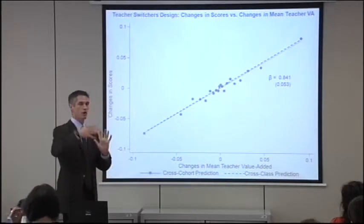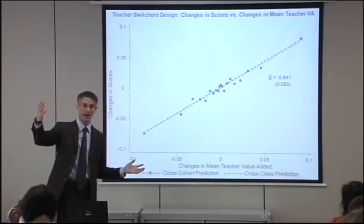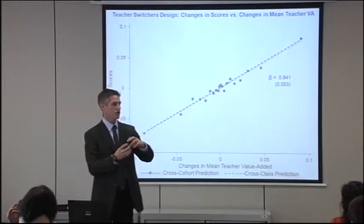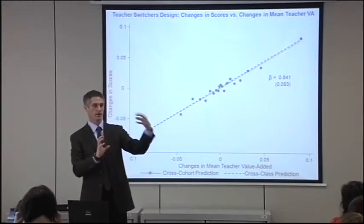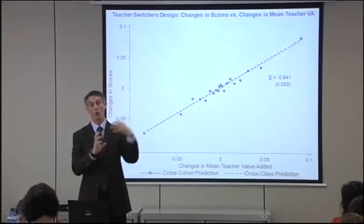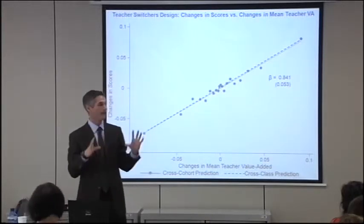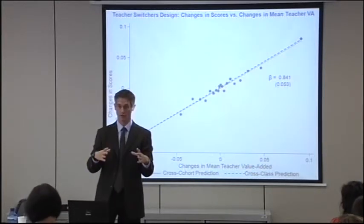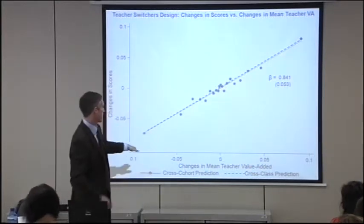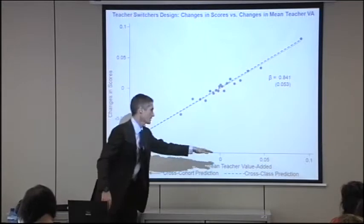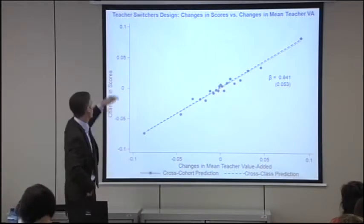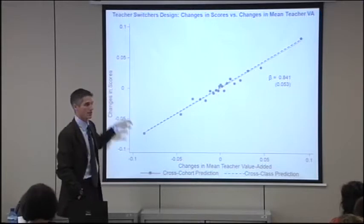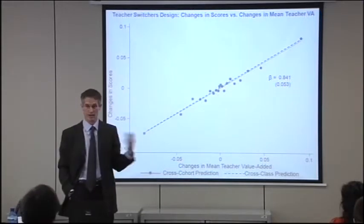This now uses all the data. What we do here is we take just the difference from one year to the next, from one cohort to the next, in the average value added of the teachers in that cohort — that's the x-axis — and then we look at the change in raw test scores across cohorts from one year to the next.